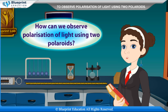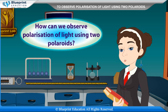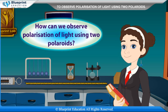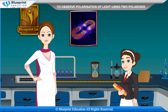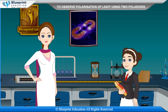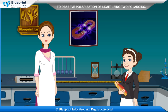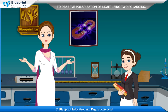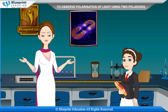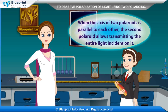How can we observe polarization of light using two polaroids? When polarized light is incident on a polaroid, the light transmitted through the polaroid is plane polarized, having electric vectors parallel to the axis of the polaroid.